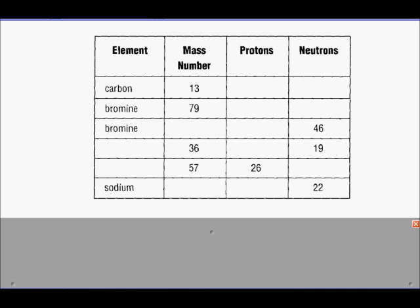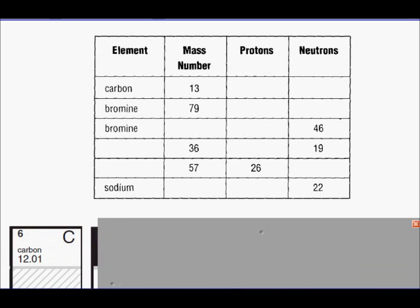So the first thing we have to do is go and look at carbon on the periodic table, and what we find is that carbon is atomic number six. Atomic number six is just another way of saying its nucleus has six protons. With six protons and a total mass number of 13, that means the remaining seven atomic mass units must be due to neutrons. So this has six protons and seven neutrons.